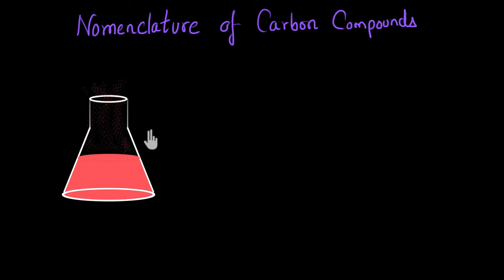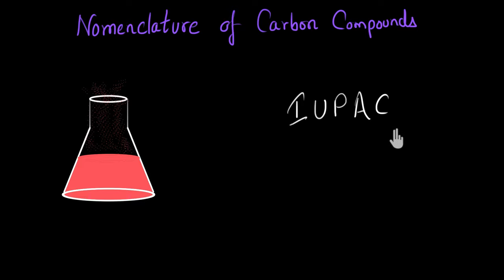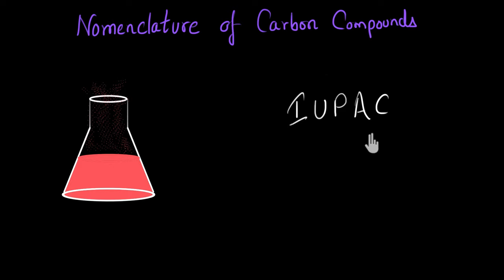That's where a union of scientists came together called IUPAC — the International Union of Pure and Applied Chemistry — and they gave certain rules to name these compounds. That's what we are trying to talk about in this video: the nomenclature of carbon compounds. With these rules, we can all come up with the names of all of the carbon compounds.